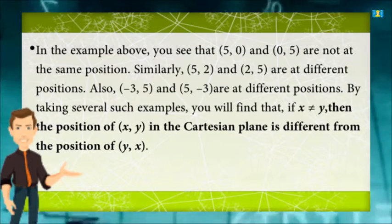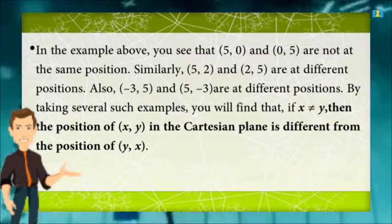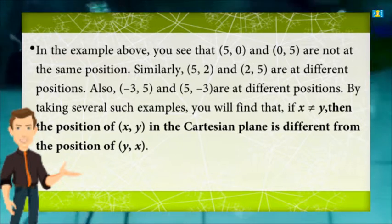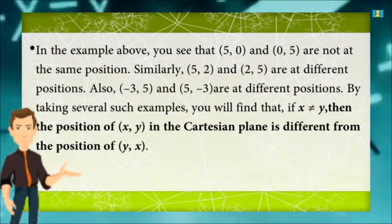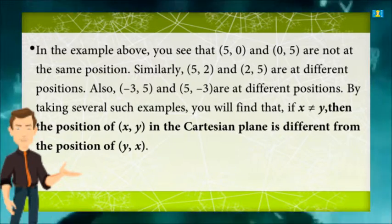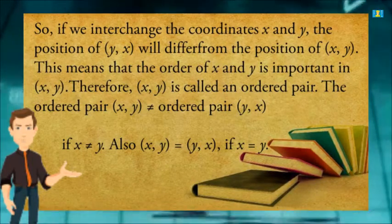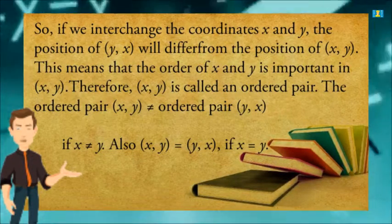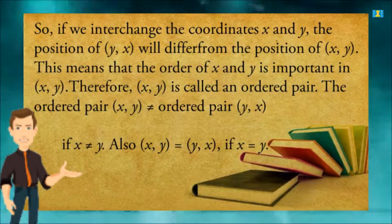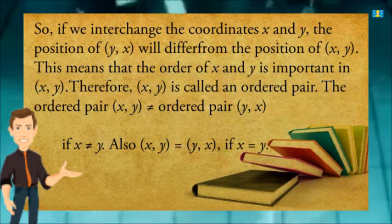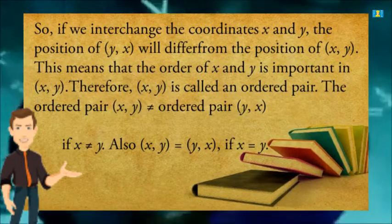Similarly, (5,2) and (2,5) are at different positions, and (-3,5) and (5,-3) are also at different positions. From these examples, if X ≠ Y, then the position of (X,Y) in the Cartesian plane is different from the position of (Y,X). If we interchange the coordinates X and Y, the position of (Y,X) differs from (X,Y). This means the order of X and Y is important — therefore (X,Y) is called an ordered pair. The ordered pair (X,Y) ≠ (Y,X) if X ≠ Y, but (X,Y) = (Y,X) if X = Y.